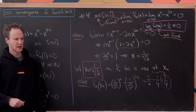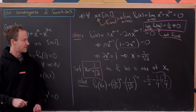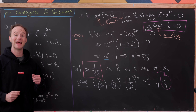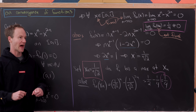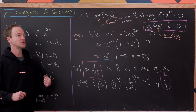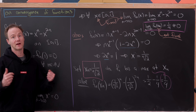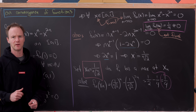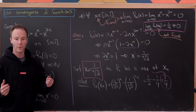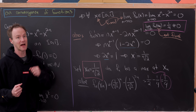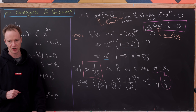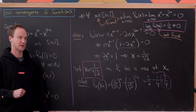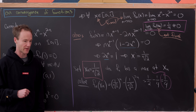It seems like there should be a class of functions where these limits do line up — functions that don't just converge point-wise for every x, but converge uniformly, where the function itself converges to another function rather than just the values of the function converging to the values of another function.